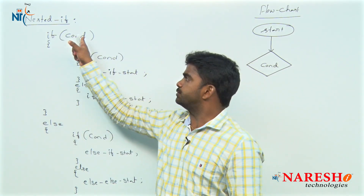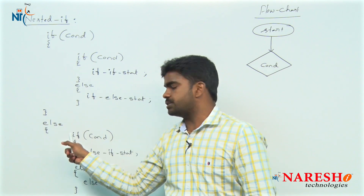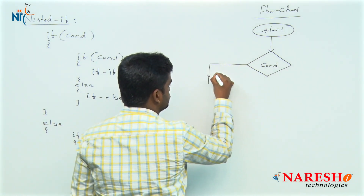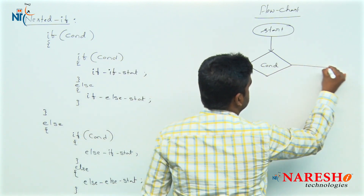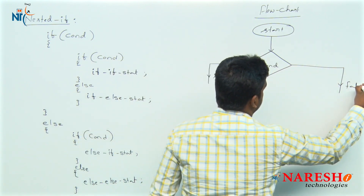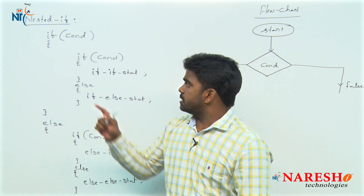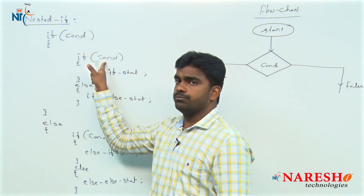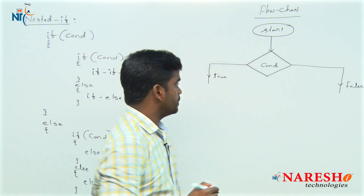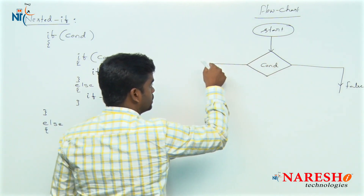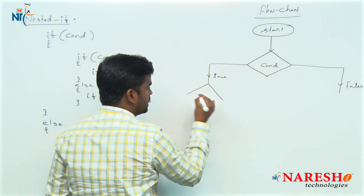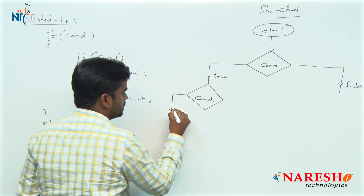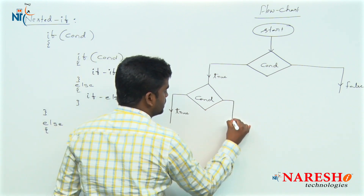For the outer condition, if true it will go inside; if false it will move to the else block. So two options are there — outer condition true or outer condition false. If outer condition is true, the control moves inside and checks the inner if block condition, for which again two options are present — true or false.